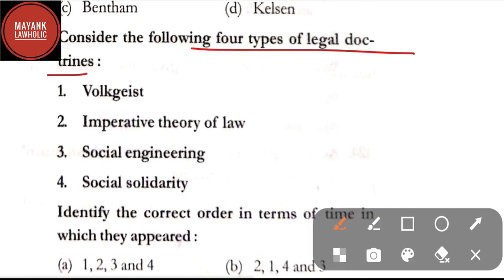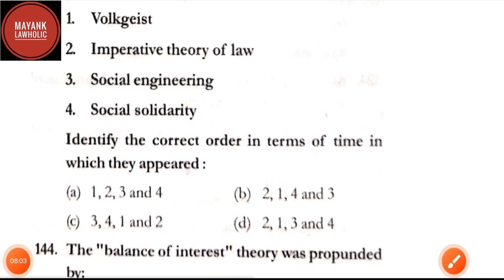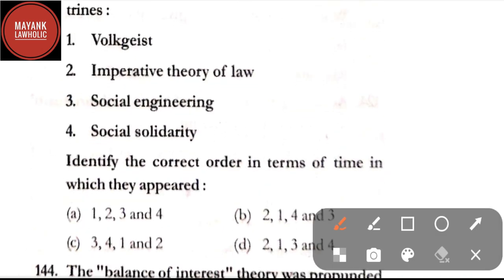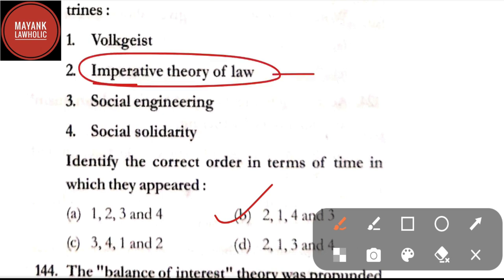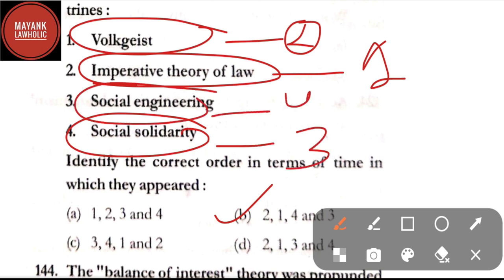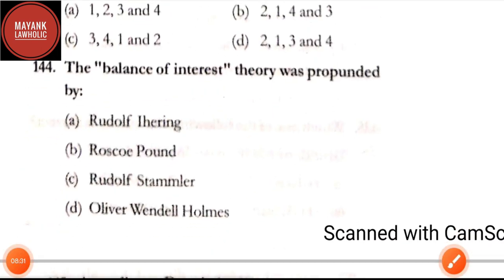Question number 143: consider the following four types of legal doctrines — Volksgeist, imperative theory of law, social engineering, and social solidarity. Identify the correct chronological order in which they appeared. The correct answer is option B, order 2-1-4-3 — meaning imperative theory of law appeared first, then Volksgeist, then social solidarity, and finally social engineering.